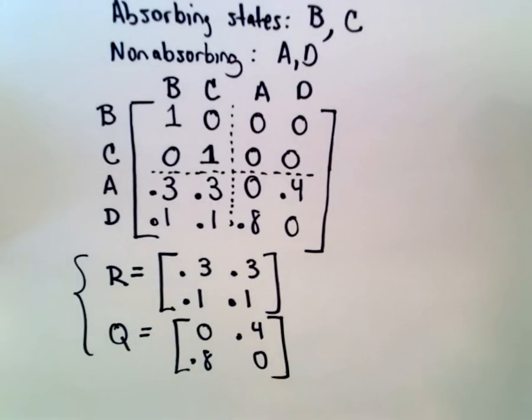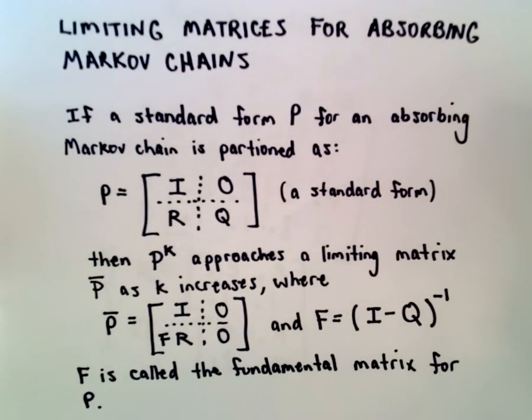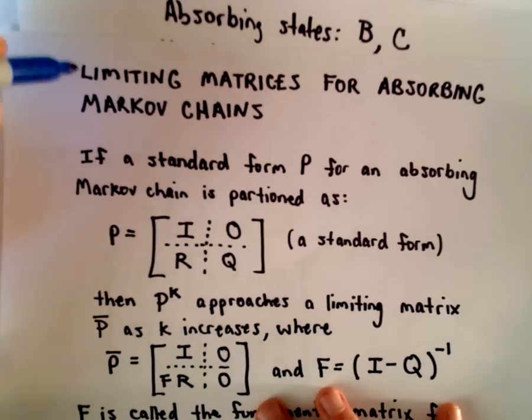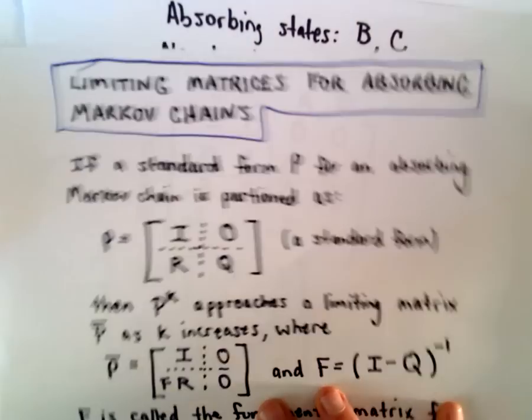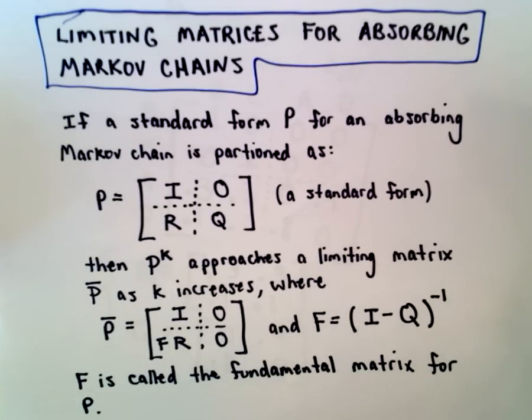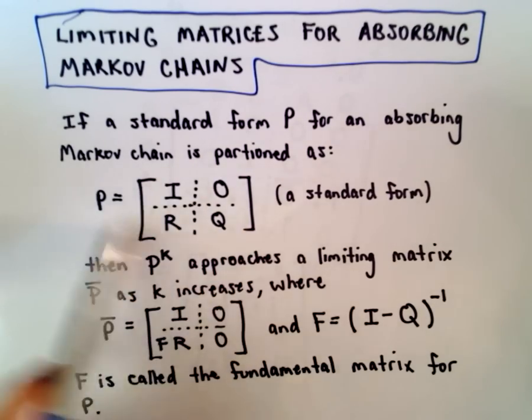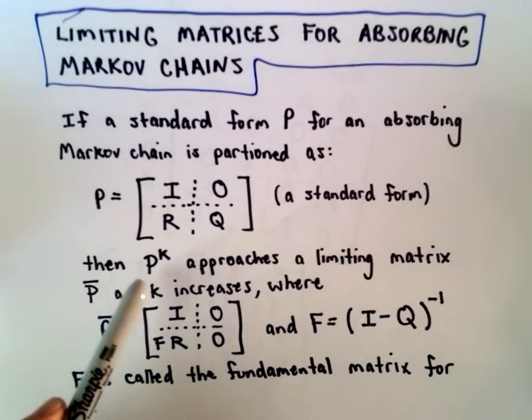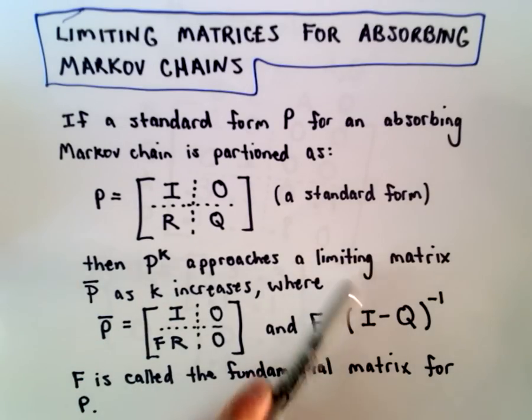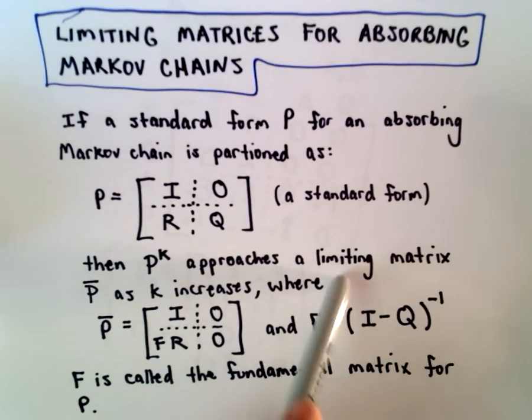So eventually what we want to do is we want to find these limiting matrices for absorbing Markov chains. So if a standard form P for an absorbing Markov chain is partitioned as follows, then P to the power of K is going to approach a limiting matrix P bar as K increases. So if we start looking at powers of the matrix P, that's going to approach some limiting matrix. And that's the whole idea here, is finding this limiting matrix.